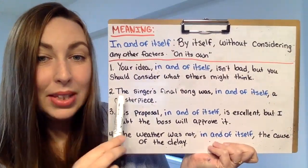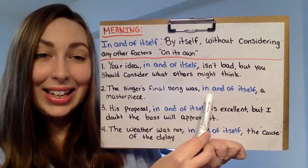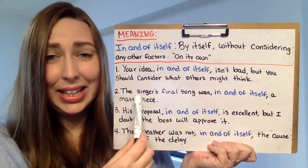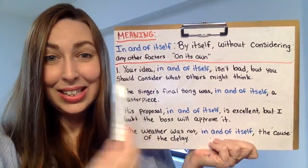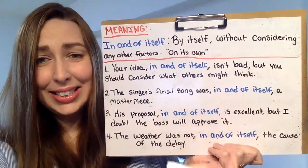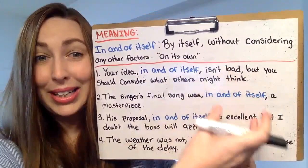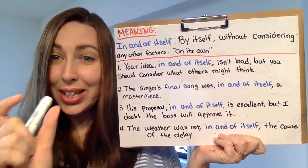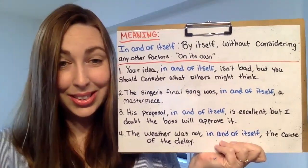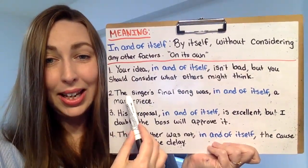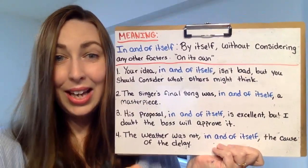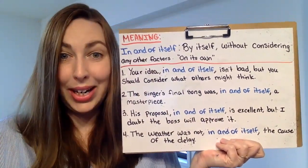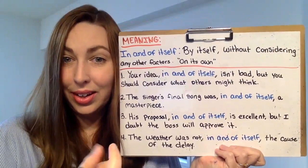Okay, if you have any questions, feel free to put them in the comments. So number two: 'The singer's final song was, in and of itself, a masterpiece.' What does this mean? Well, we could say 'the singer's final song was a masterpiece.' Maybe the whole concert was a masterpiece, but also just this one song alone was also a masterpiece. If you use in and of itself, it has a little bit of emphasis — you're saying this song alone is a masterpiece.